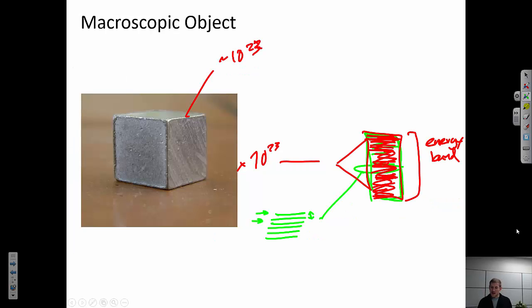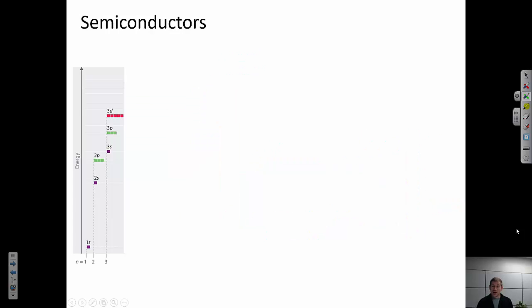That was a sodium atom. In that case, we're thinking about mixing together only these 3s orbitals. And they lead to one continuous band. It gets a little bit more complicated as we think about some of the traditional semiconductors. So something like silicon is going to have 3s and 3p electrons.